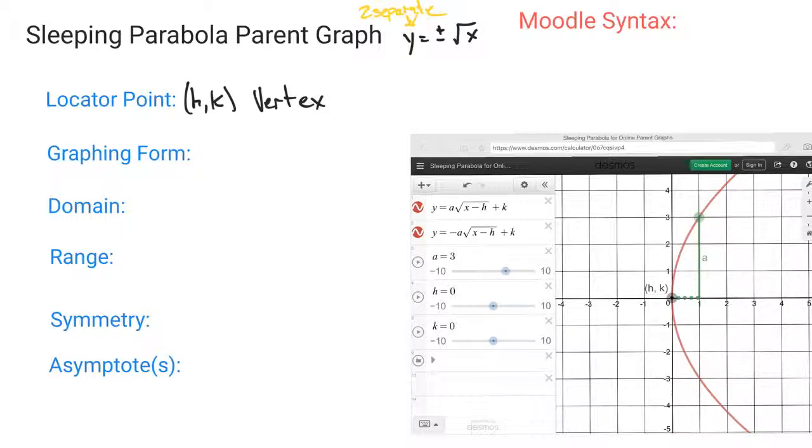And even on Desmos grapher, you can see that in order to create this graph, I didn't have a choice. I had to write it as y equals the positive and y equals the negative. Even on your graphing calculator, you will have to do that every single time.